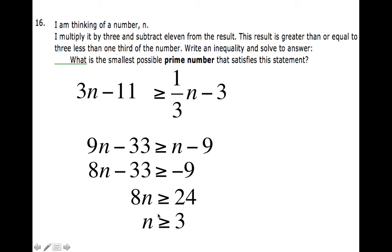n is greater than or equal to 3. So I found the solution set. n can be any number greater than or equal to 3, so n can be 3, 4, 5, 6, on and on forever.